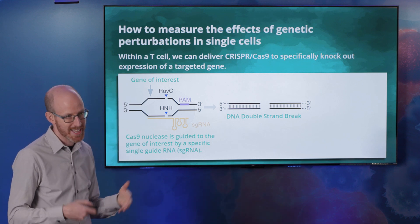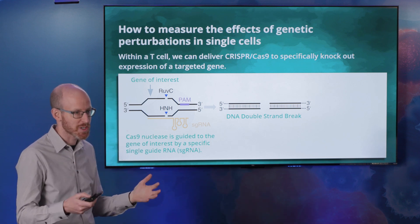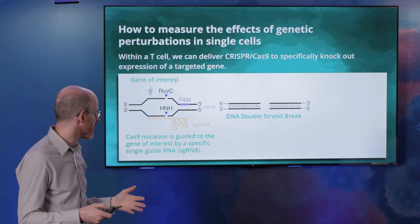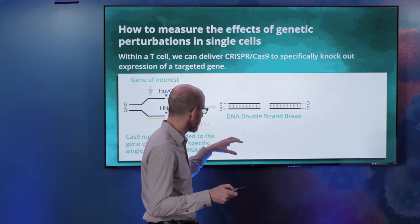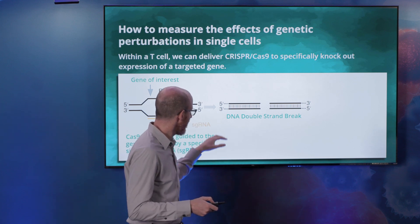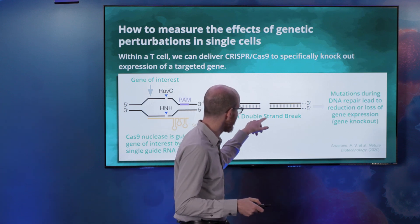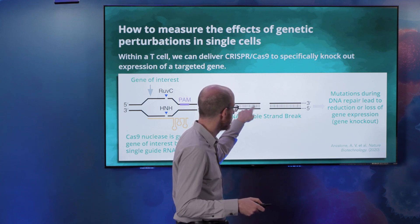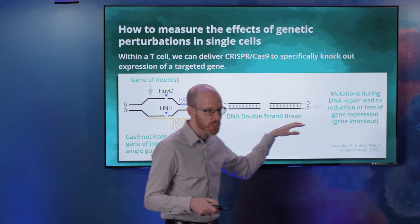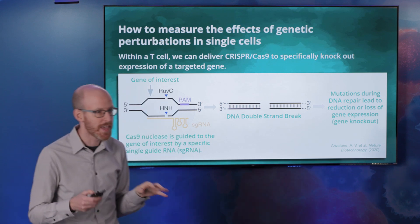This double-strand break is a really bad thing for the genome in general, but it allows us to actually reduce or eliminate the expression of a target gene. What happens when you have this break is that repair machinery in our bodies gets activated, and while trying to repair this break, there are mutations that are typically made. Those mutations introduced into the gene lead to reduction or complete loss of that gene's expression, giving us the ability to knock out genes like TCF7 or PDCD1 in a highly targeted and specific way.